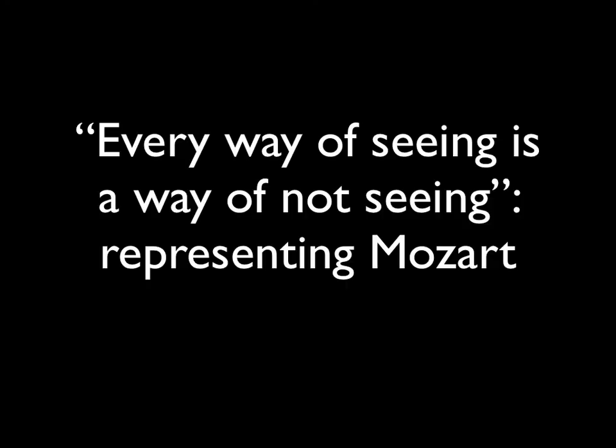I've got two slogans I want to explore in today's talk. One is this notion that I learned from Elliot Eisner, which is that every way of seeing is a way of not seeing. We're going to represent Mozart in a variety of ways — four ways very quickly — and talk about how these ways are slightly different. In order to be quick, we're going to work with just a short fragment of a sonata that you very likely know.